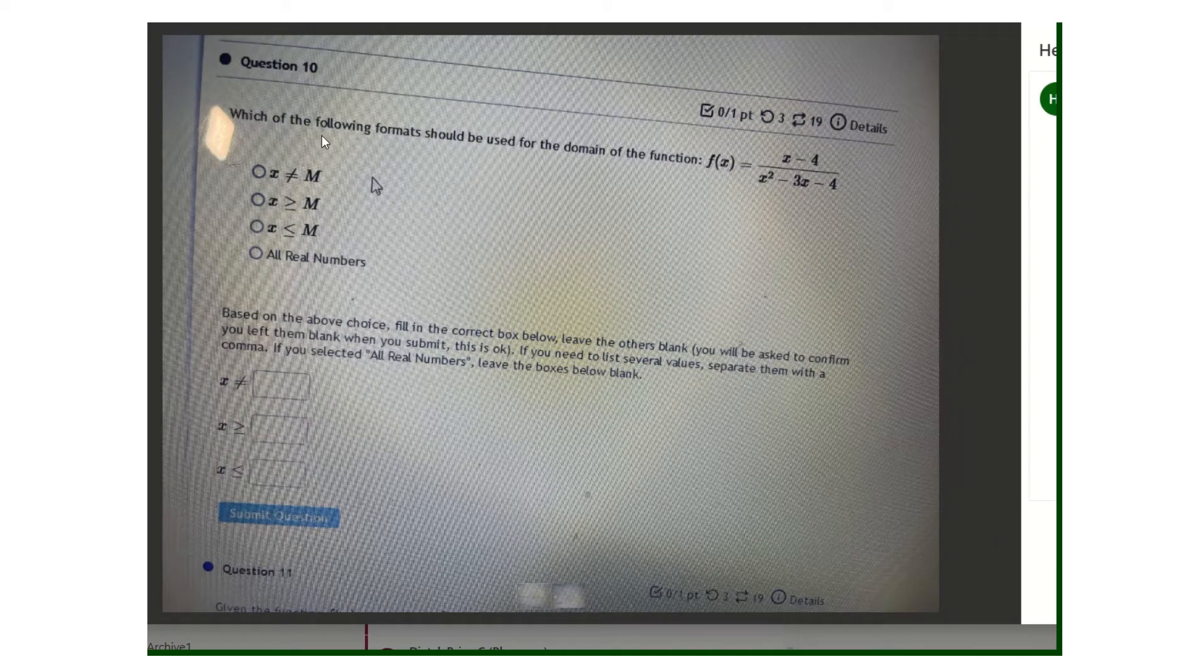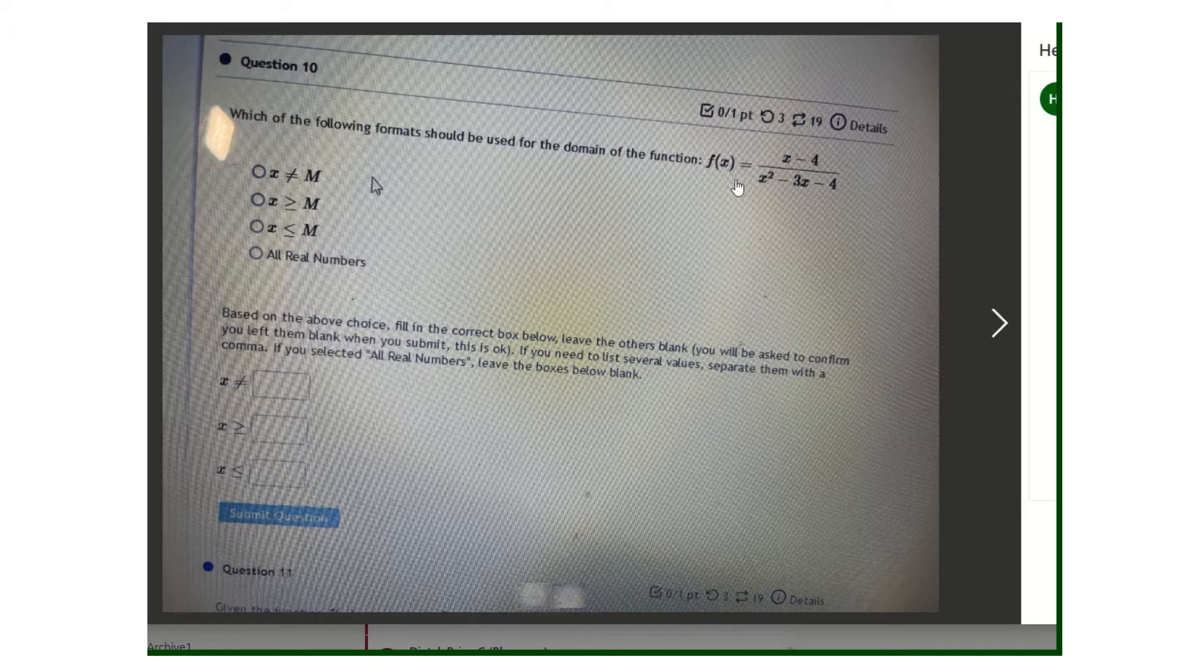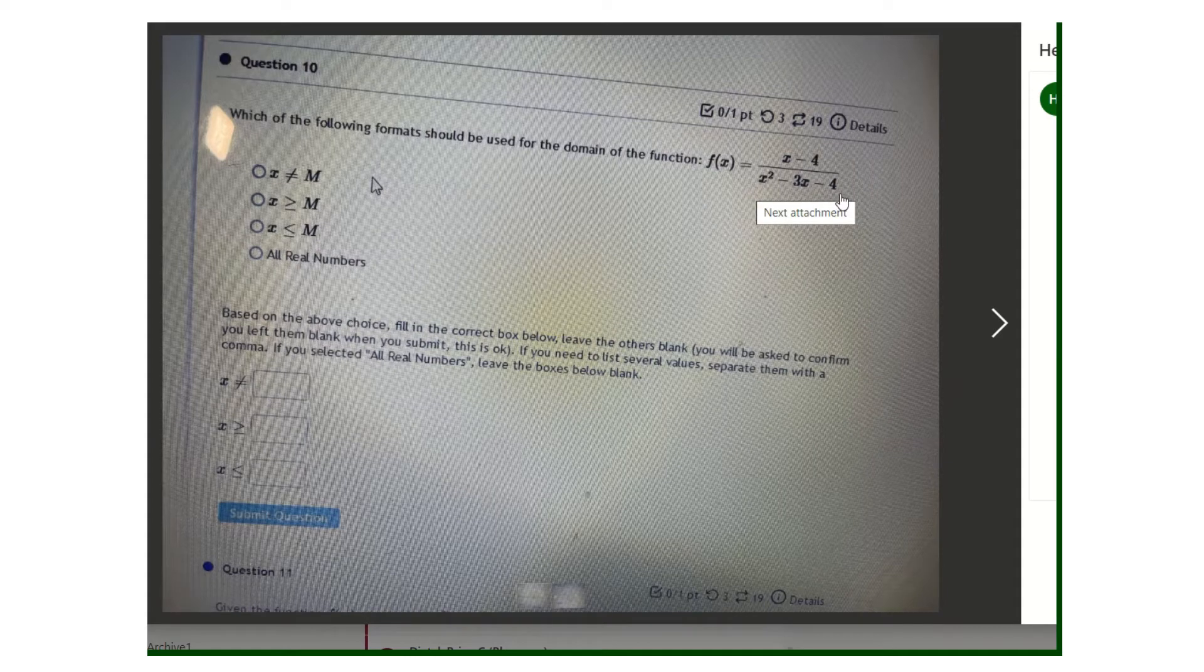Okay, so let's look at number 10 first. Which of the following formats should be used for the domain of the function f(x) equal x minus 4 over x squared minus 3x minus 4 on the bottom?